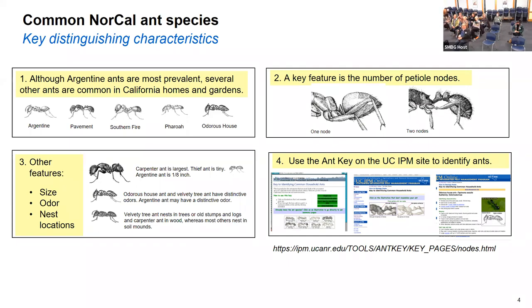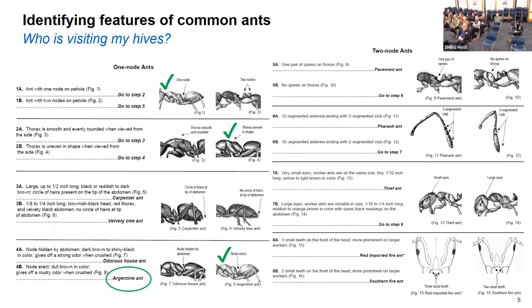You could go to the UC University of California IPM website and try to identify this using their key. You need to have a microscope, or if you want to capture one, I can bring it home and look at it under my microscope. This is a common way that a biologist would go through physical characteristics and go down certain pathways until you figure out what you might have.